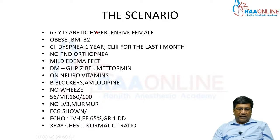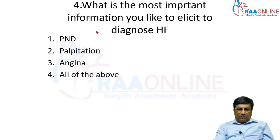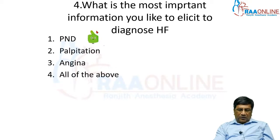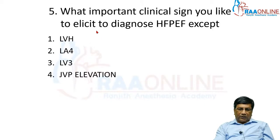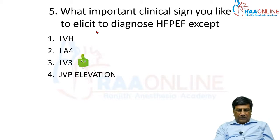This patient has class three dyspnea. What is the most important history you would like to elicit to diagnose heart failure here? PND — paroxysmal nocturnal dyspnea — is a very important clinical history which will tell you not only that the dyspnea is cardiac, but also that it is due to left-sided pathology. The most important clinical sign to elicit in heart failure with preserved ejection fraction, apart from LVH, is left atrial fourth heart sound and JVP elevation — not a third heart sound. The third heart sound is a sign of systolic dysfunction; the fourth heart sound is a sign of diastolic dysfunction.